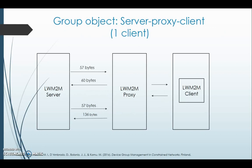The next scenario is the server-proxy-client scenario with one client. The LWM2M server sends a request to the proxy of 57 bytes and the proxy replies with an acknowledgement of 60 bytes. The proxy requests the values from the client and caches them for later use. When the server requests these values from the proxy, it is 57 bytes and the proxy replies with 136 bytes to the server.